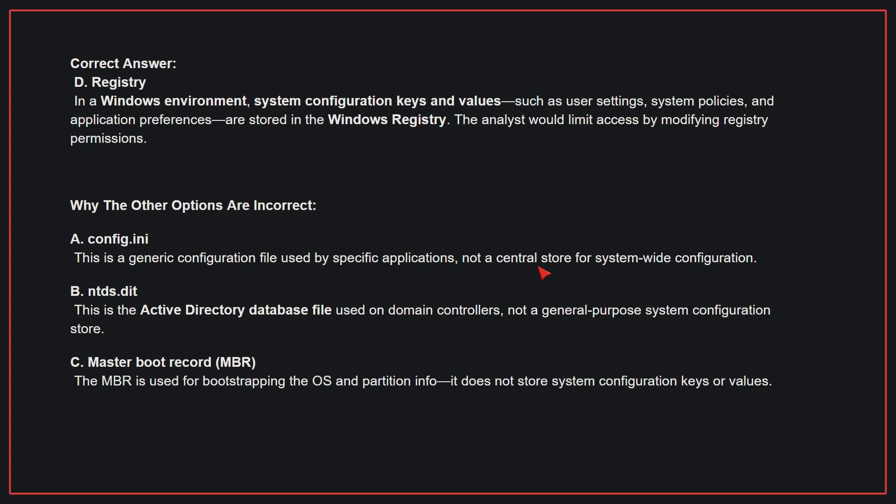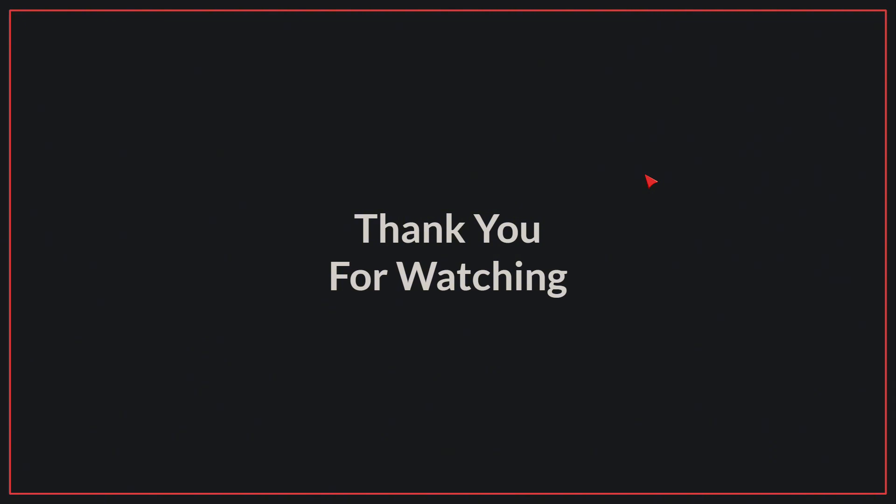Why the other options are incorrect? A: config.ini — this is a generic configuration file used by specific applications, not a central store for system-wide configuration. B: ntds.dit — this is the Active Directory database file used on domain controllers, not a general-purpose system configuration store. C: MBR — the Master Boot Record is used for bootstrapping the OS and partition info; it does not store system configuration keys or values. Therefore, the correct answer is D. We have come to the end of today's video. If you liked the video, please make sure to like and subscribe. Goodbye.